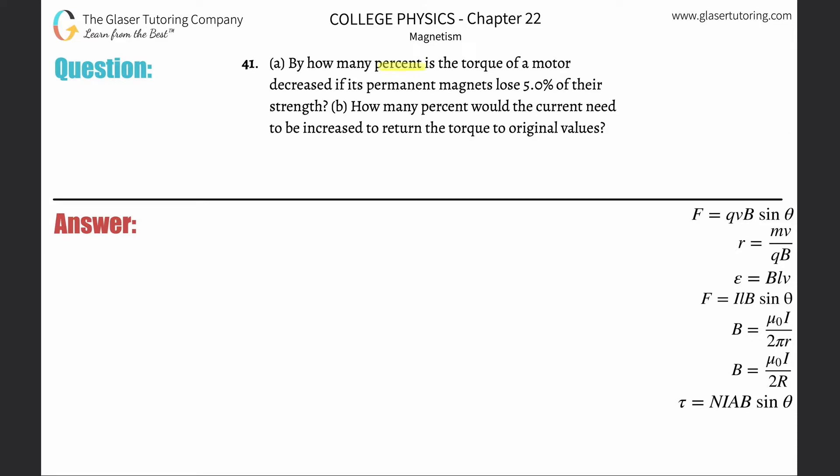Number 41, letter A: by how many percent is the torque of a motor decreased if its permanent magnets lose 5% of their strength? So we need to know a relation between torque and magnetic field strength essentially. So here it is, here's the formula: the torque will equal the number of loops multiplied by the current multiplied by the cross-sectional area by the magnetic field sine of theta.